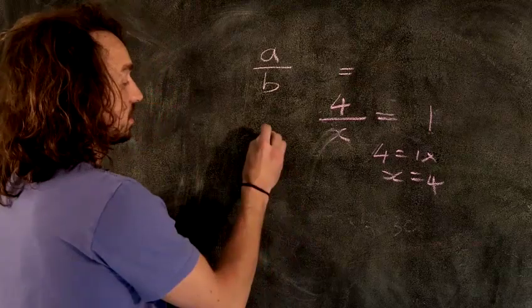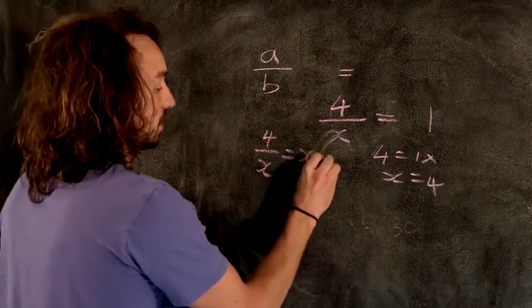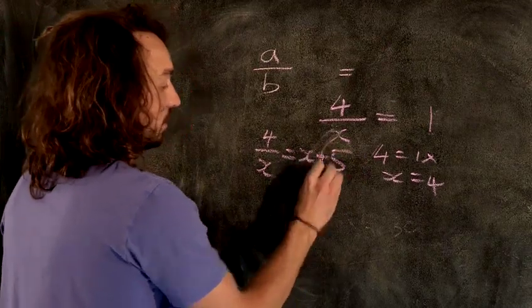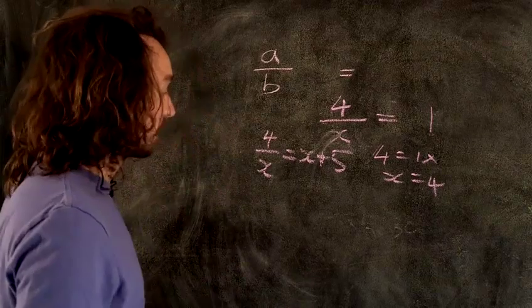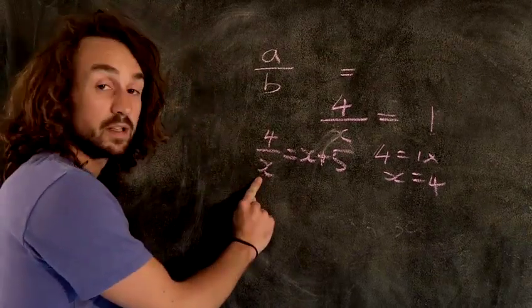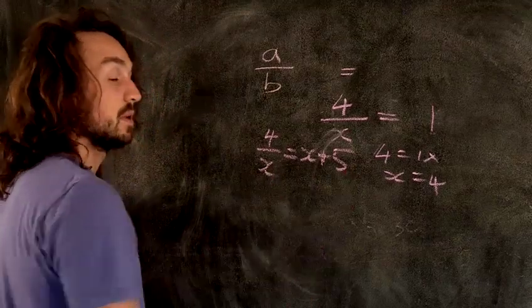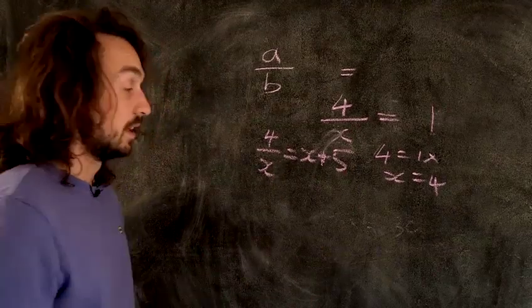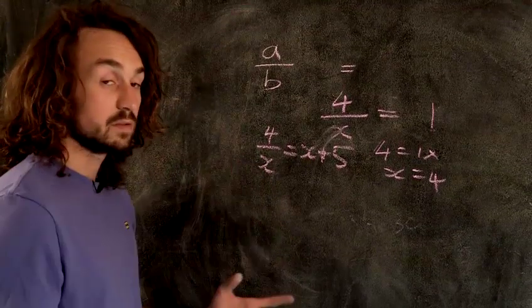You might end up with equations that look like this: four over X equals X plus five. Now this is a bit more complicated and care needs to be taken. This X is on the bottom here, so what do I need to do to both sides to balance out the equation and get the X up here so I can start working with it? I must, must, must multiply both sides by X, we know that.